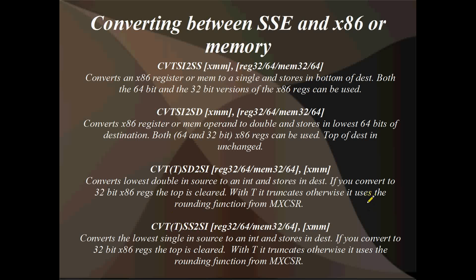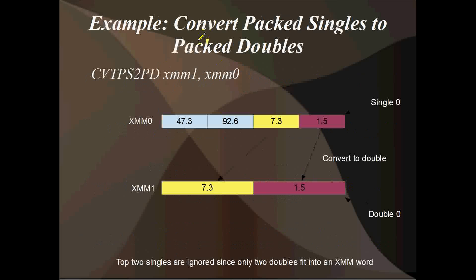Let's have a look at some of these in detail. The first example is convert packed singles to packed doubles - CVTPS2PD. We've got singles zero, one, two, three in SSE register XMM0. Only two doubles can fit in an SSE register, so it's the bottom two singles that are actually converted. The top two singles of XMM0, the source operand, are completely ignored. The final answer is 1.5 and 7.3.